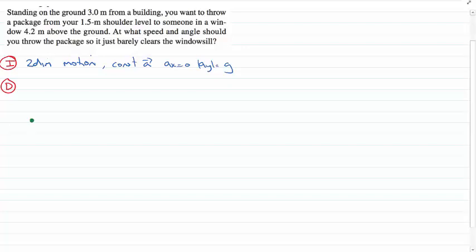We know the initial position of the package, x0, which is 3 meters away from a building, the final horizontal position of the package. We also know that the package is being thrown through a window which is 4.2 meters above the ground. That's the final vertical position of the package. Importantly, the package is also located at an initial y position which is 1.5 meters above the ground.